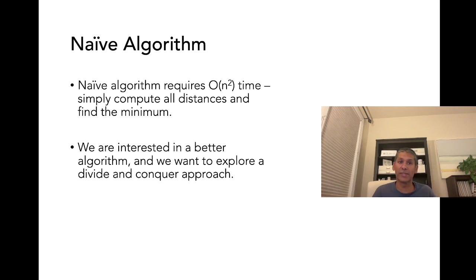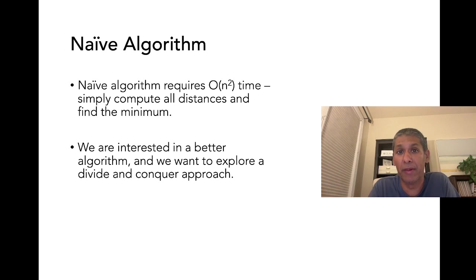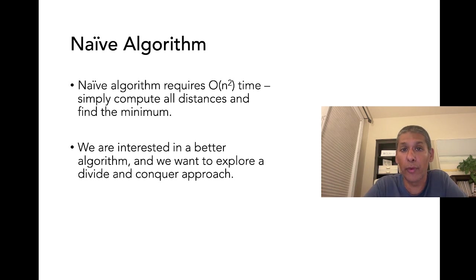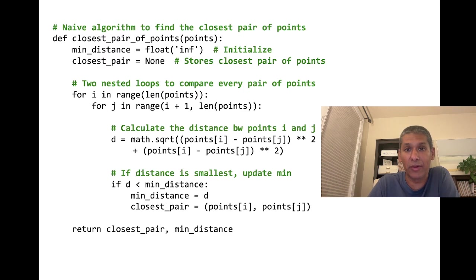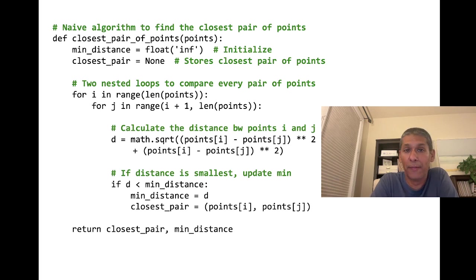Let's quickly look at the naive algorithm — the simplest algorithm we can find. That algorithm simply computes all the distances and finds the minimum. To find the distance it's simply the formula: square root of x-squared plus y-squared. We compare all n² combinations and take the minimum. If you want to use the naive algorithm, it looks like this: there are two for loops — for i in range, for j in range.